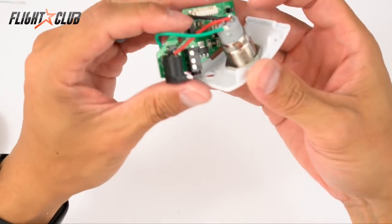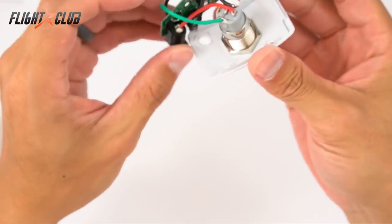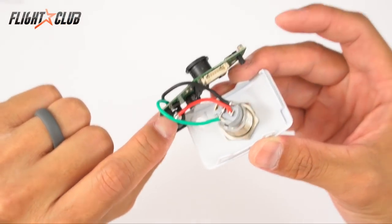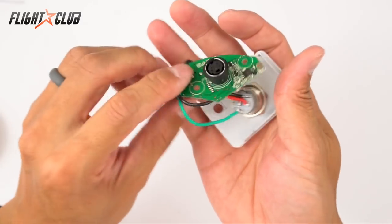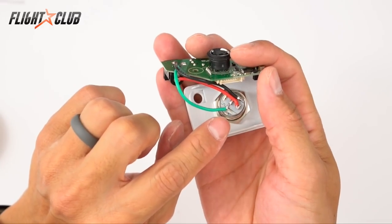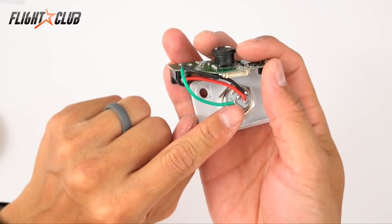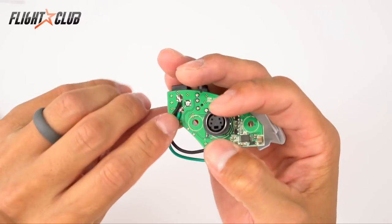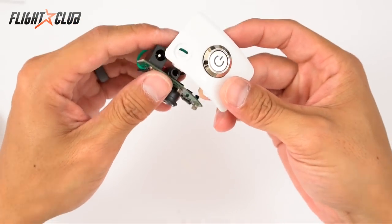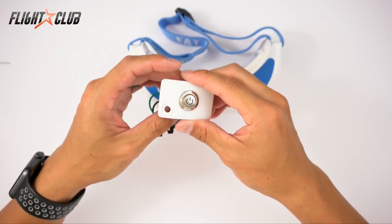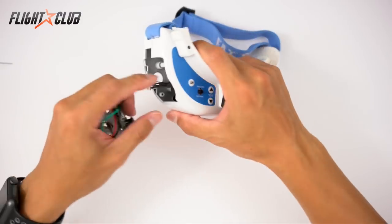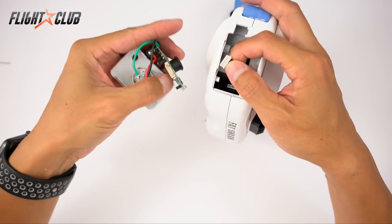And then once you have this wired up, you can just go ahead and put it back into your goggles. So to finish up, I'm just going to put this back into your goggles. Just do everything backwards. So first I'm going to plug in this little connector onto the board.